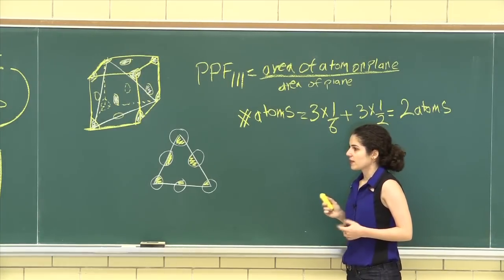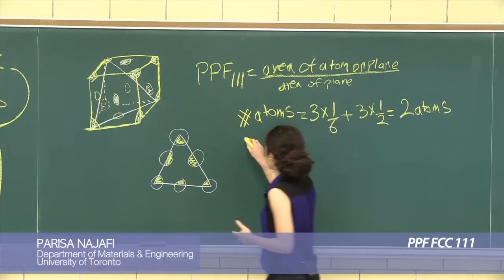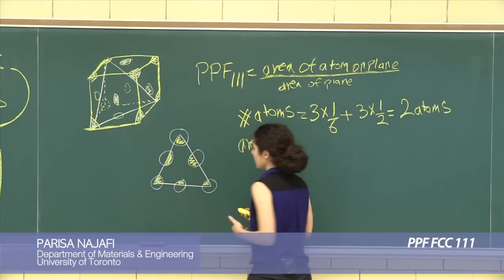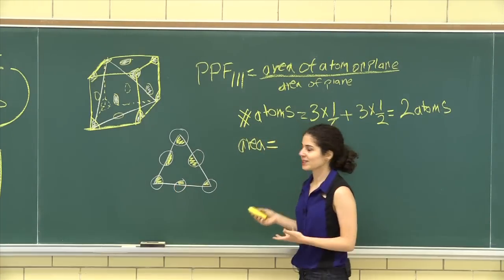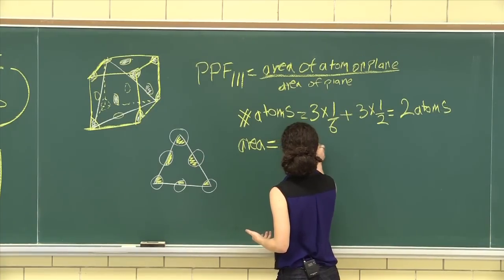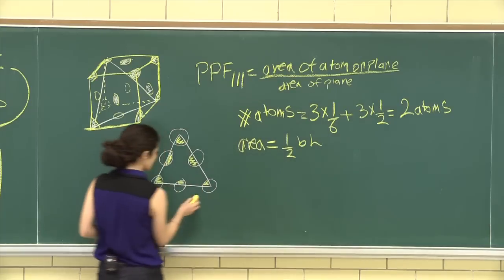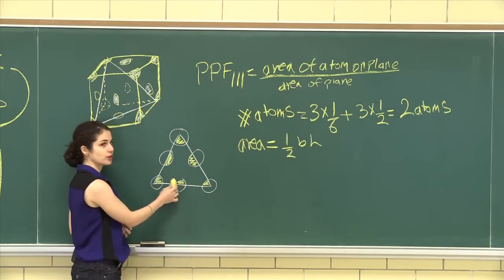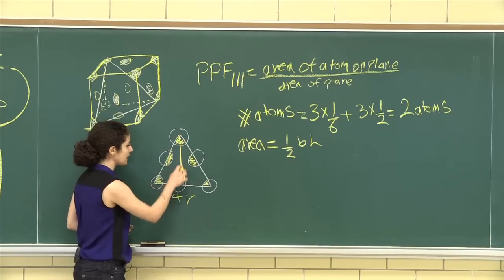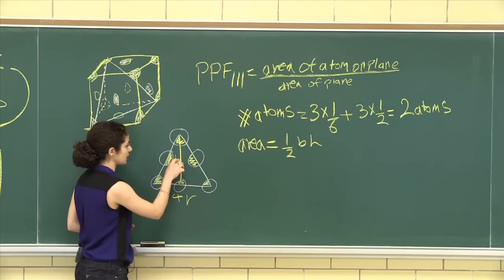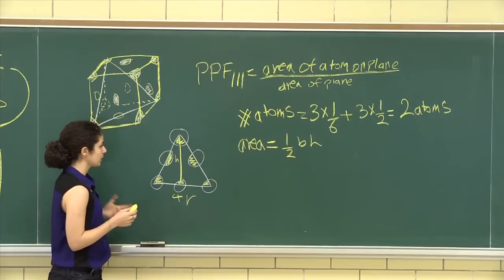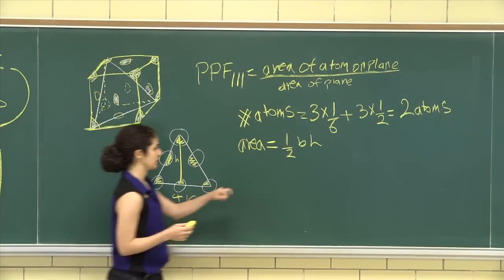Perfect. Now we need to know the area of the plane. The area of a regular triangle is half base times height. The base here is 1, 2, 3, 4r, but the height I'll call h is something we don't know, so we're going to try to calculate the height over here.